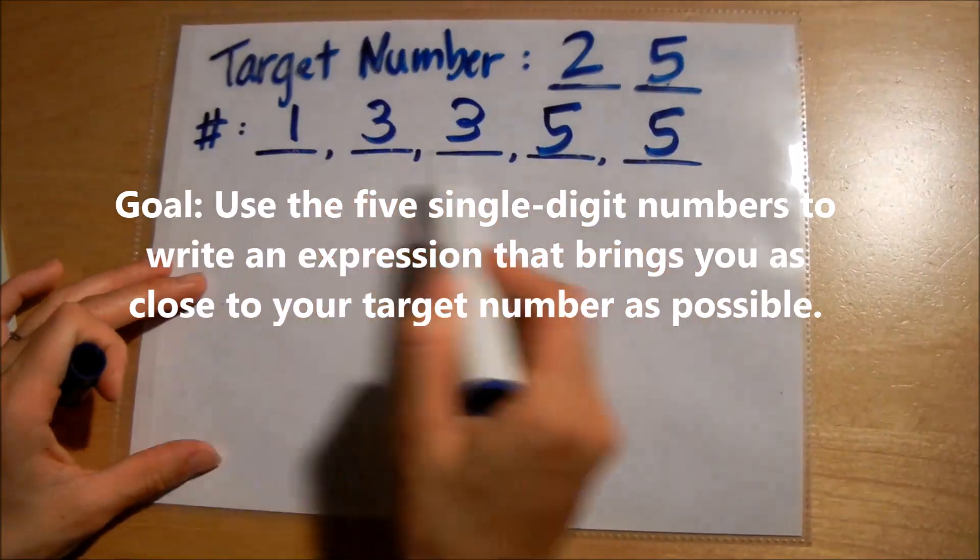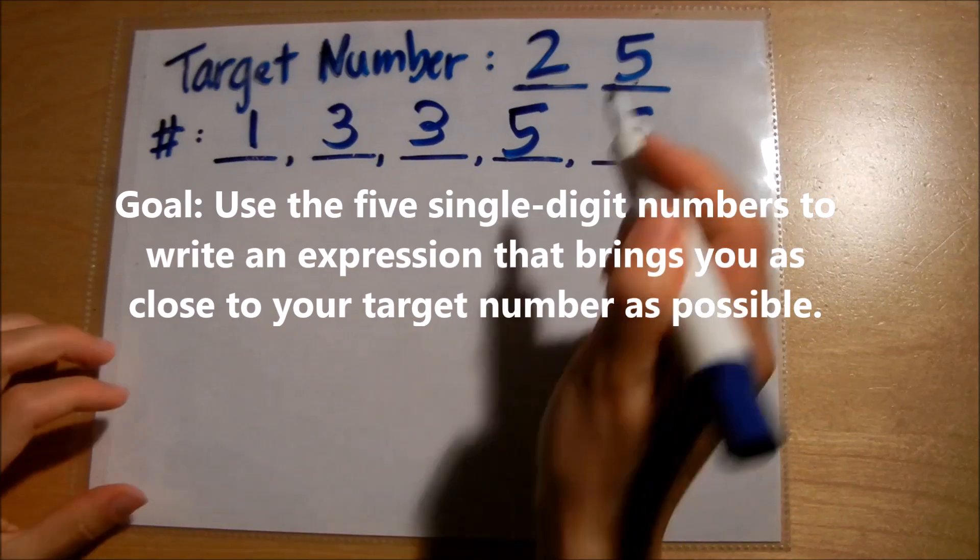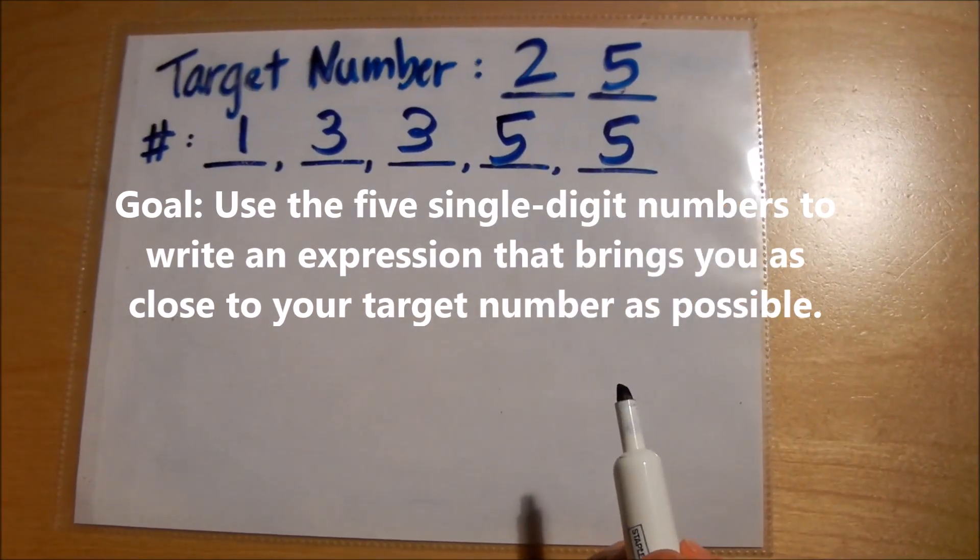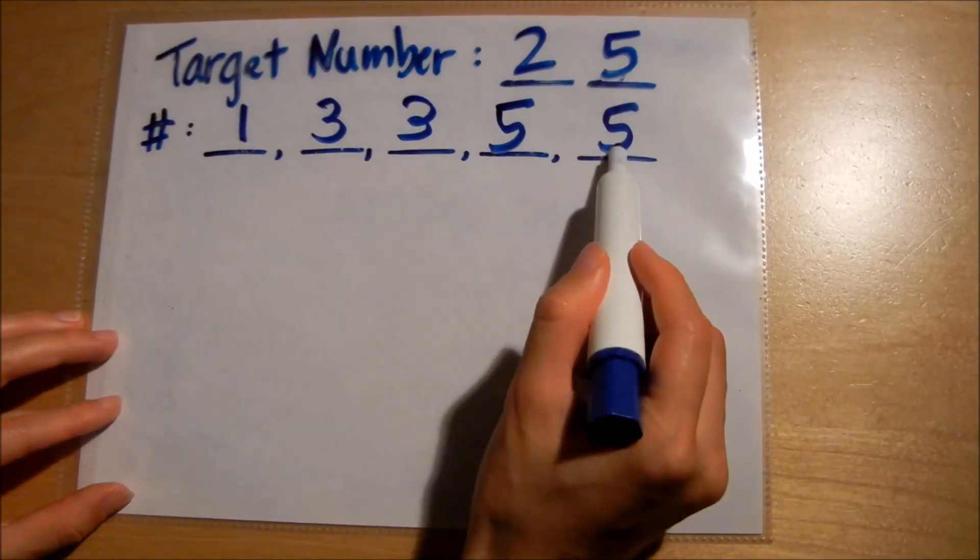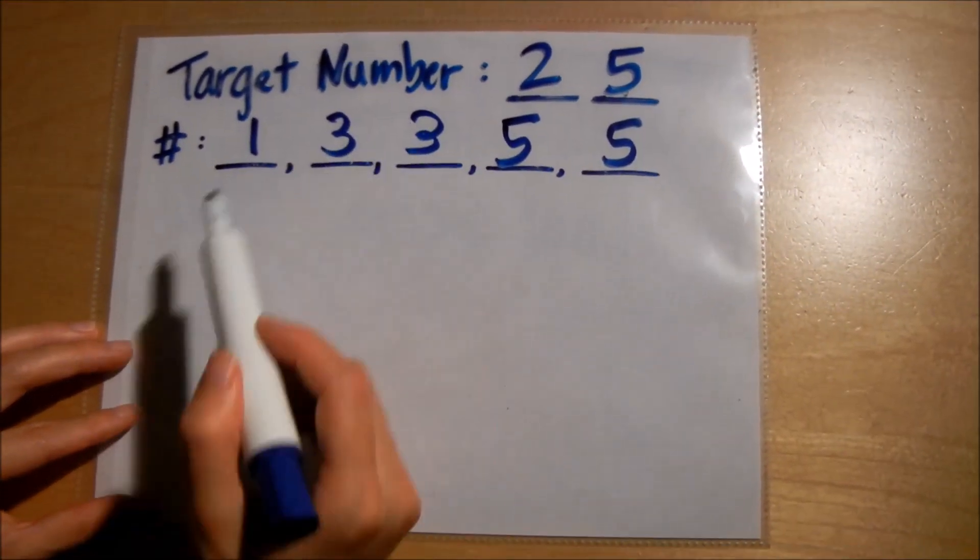Now I'm going to try to use these numbers and add and subtract, multiply and divide them to come up with the number 25. In my head, the easiest way to get to 25 is five times five, which I have, and then I just got to find a way to get rid of these.